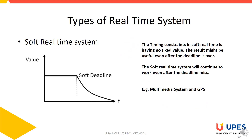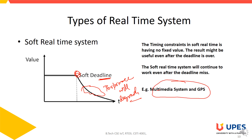In a soft real-time system, if there is a deadline miss it goes to some unfavorable scenario, but the system continues its work — the performance will be degraded. Examples of soft real-time systems are multimedia systems and GPS systems. While using GPS, many times your location is not correctly predicted, but after a certain amount of time you can find your correct location.